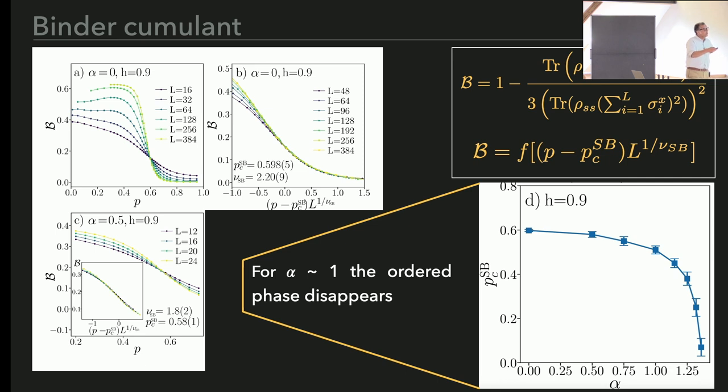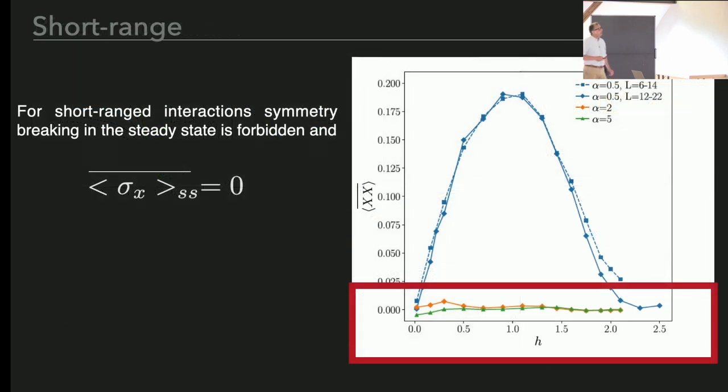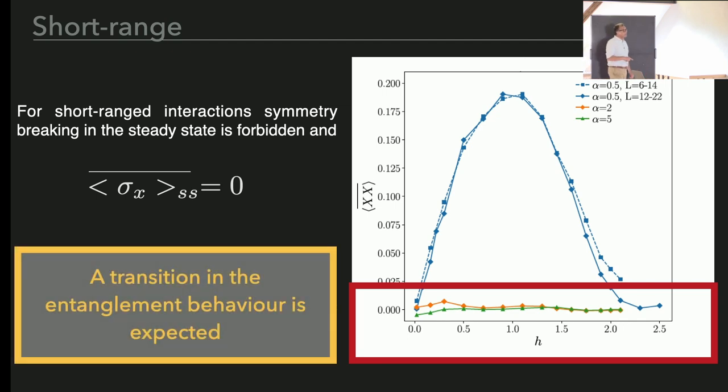This is the critical probability as a function of alpha. You see that essentially this is the long range part. But as long as you go to shorter range, of the order one, then this ordering transition disappears. Indeed, if you look at the larger value of alpha short range, you see the correlation along the x directions are completely vanishing. Nevertheless, this does not imply that this region here is featureless, because entanglement may show additional critical behavior.